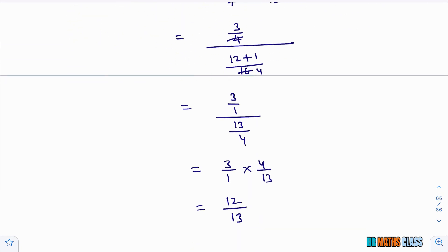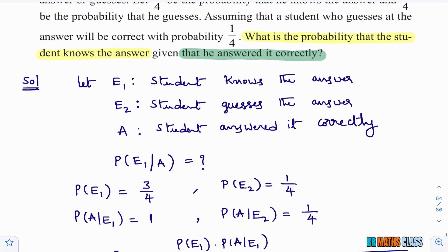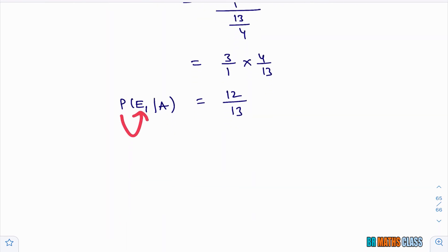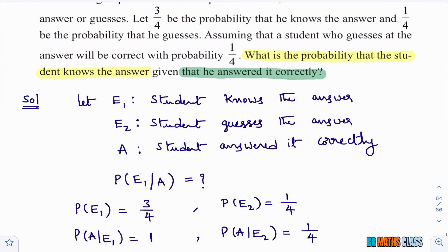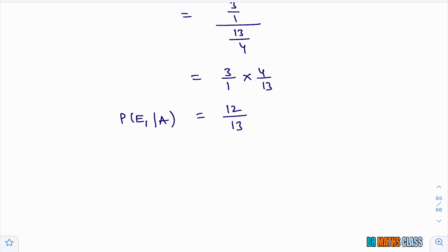So we calculated P(E1|A) = 12/13. The meaning: the probability that the student knows the answer, given that he answered it correctly, is 12/13. This is exactly what the question asked. I hope you understand this solution.